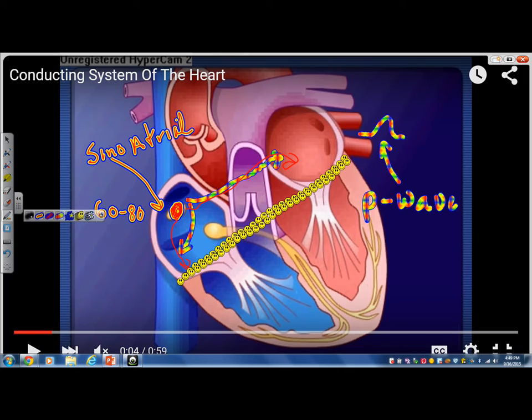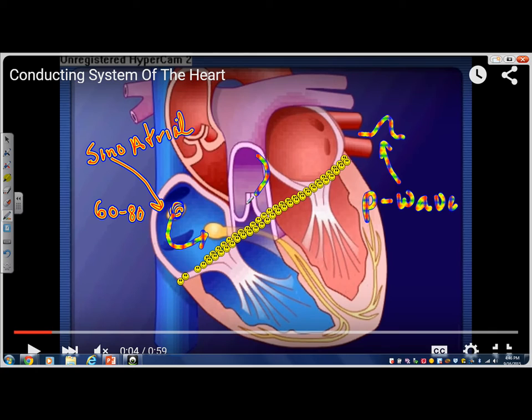So what happens is once that impulse is generated in the SA node, the only way in the normal electrical conducting activity of the heart that that impulse that was generated in the SA node can get to the ventricles is it has to go through the next portion of the conduction system. So all those electrical impulses that were generated by the SA node and traveled over the atria now get funneled into the next portion. And that portion is called the atrial ventricular node or the AV node. Now in the AV node, that electrical impulse sits there for a second, not a second, but a short period of time. So on an EKG, you're going to see a little tiny space right here, very tiny. What that does is that allows the atria to contract and push that additional blood into the ventricles. That's a good thing.